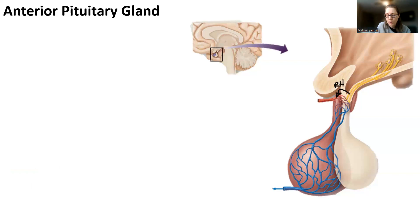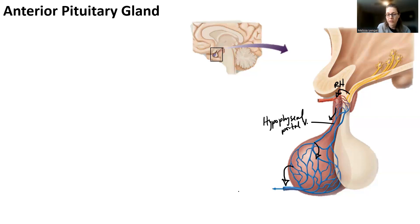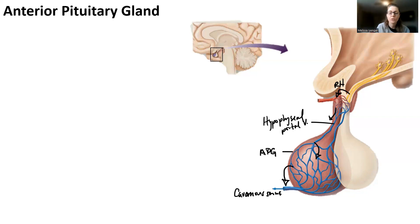We're going to have an RH hormone that gets released into the hypophysial portal vein, and it's going to travel down the hypophysial portal vein. When it gets to the anterior pituitary gland, it targets the anterior pituitary gland, and the anterior pituitary gland releases its own hormones into the cavernous sinus. You have to have a hormone that tells the anterior pituitary gland what hormone to release or stop releasing. The inhibiting hormones are less important; the releasing hormones are much more important.